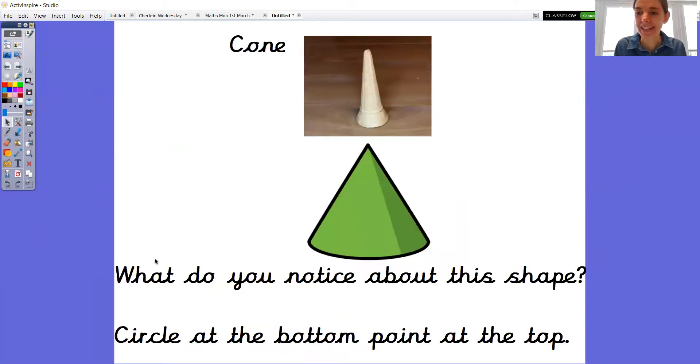What about this one? Do you remember the name? I'll give you a clue. Can you see the ice cream cone? It's a cone. What do you notice about this shape? Can you see there's got a circle at the bottom and a point at the top? Brilliant.